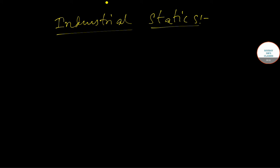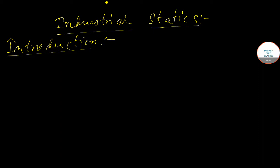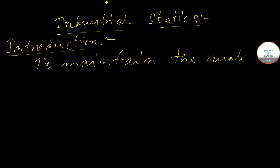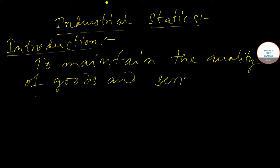To understand it to the core, you first have to know the introduction of industrial statistics. Industrial statistics is concerned with meaning and improving the quality of goods and services. So we can say that to maintain the quality of goods and services, we use industrial statistics.